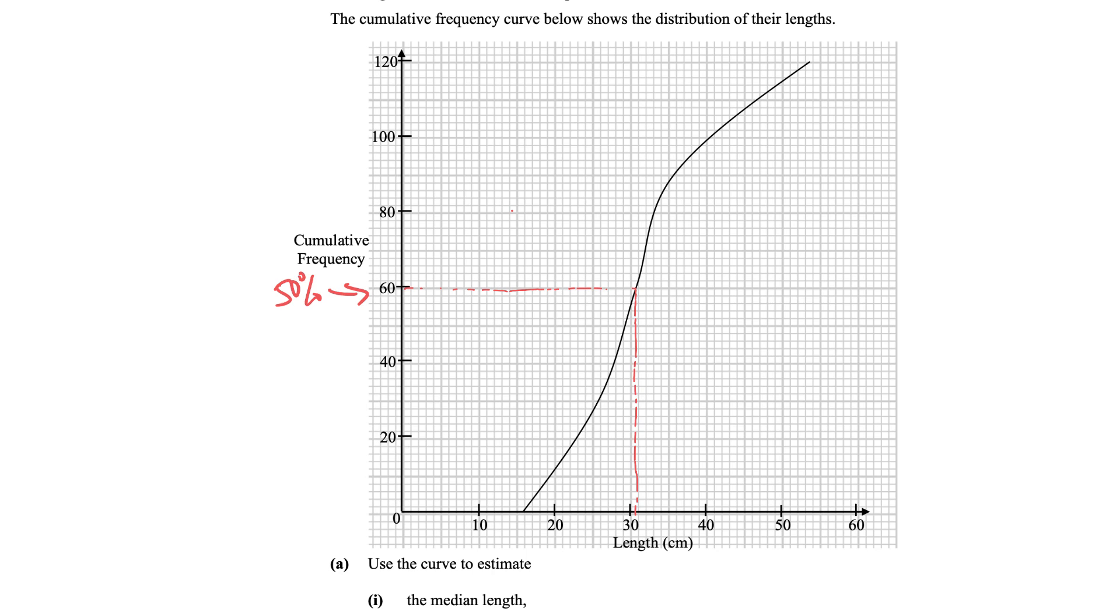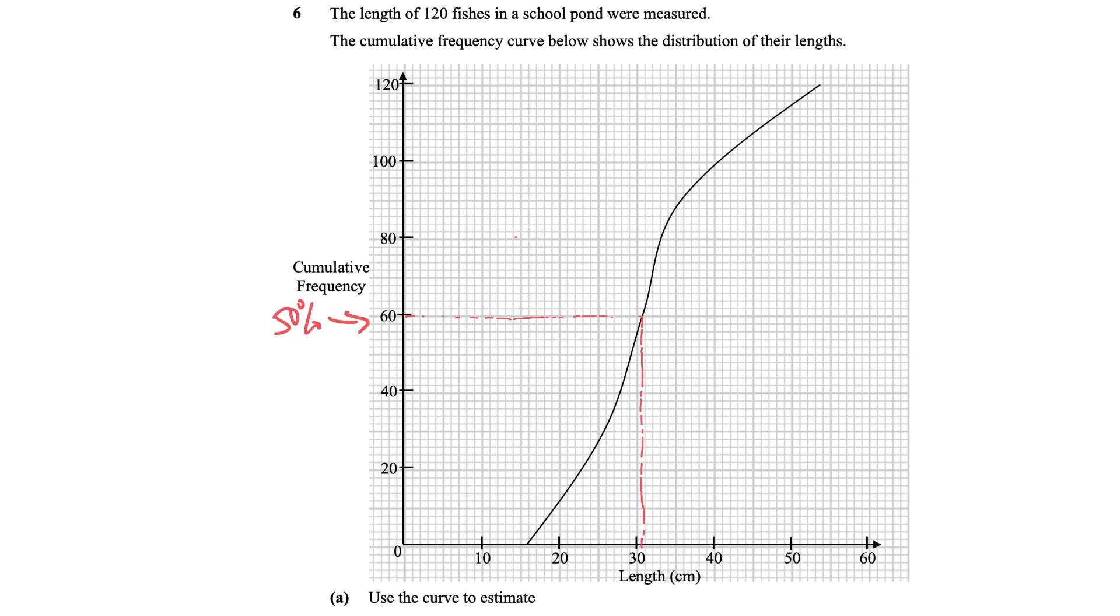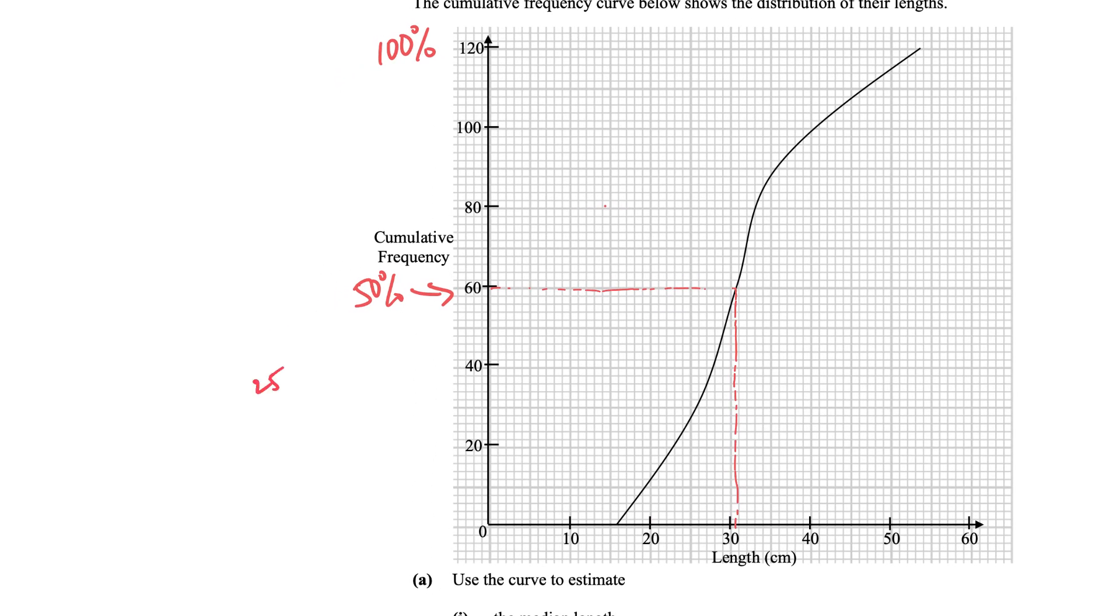60 is the 50%, and my 100% will be all 120 of it. So I first need to find where is my 25th percent, and so I find that of all my 120, I find that it's 30. That means over here, that is my lower quartile.